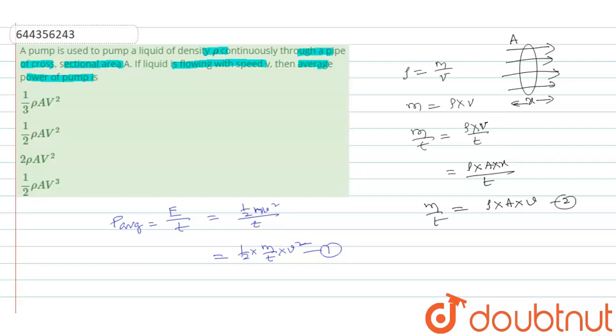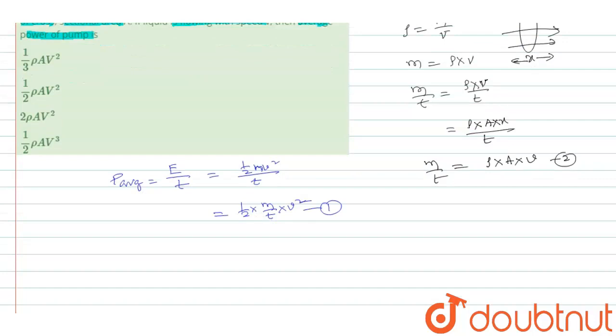Now substitute this m by T value in this given equation. Then you can get P average is equal to half m by T is equal to ρ into A into V into V².